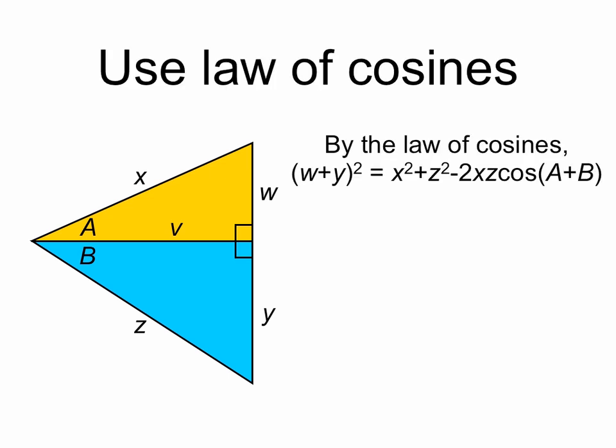Our first step is to use the law of cosines. The law of cosines relates an angle in a triangle to the lengths of the three sides. In this case we'll consider the angle a plus b, and then the three sides of the larger triangle are x, z, and w plus y. So by the law of cosines, w plus y squared equals x squared plus z squared minus 2xz cosine a plus b.